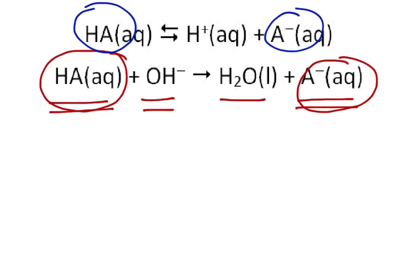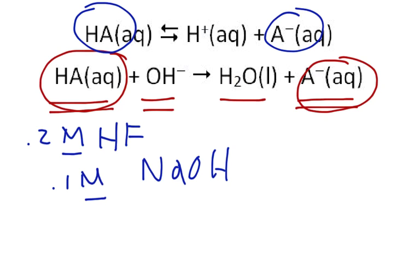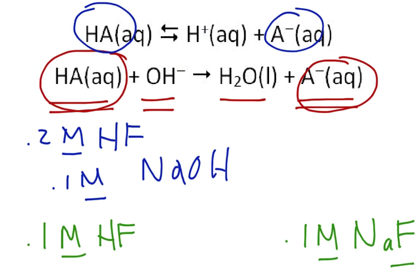The way we would do this is say we had 0.2 molar HF, and if we were to react that with some nice sodium hydroxide, but we need to be careful. Let's say we use an equal volume of 0.1 molar sodium hydroxide. Then when we were all done, we would have 0.1 molar HF, because half of it has reacted, and we would have 0.1 molar NaF, our conjugate, in the same solution.